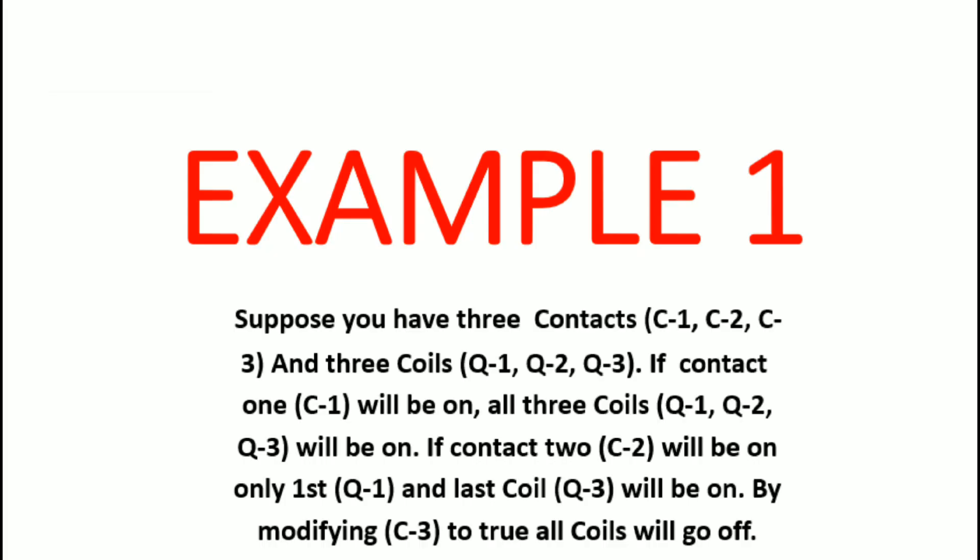The example goes like this: suppose you have three contacts C1, C2, C3 and three coils Q1, Q2, Q3. If contact one (C1) is on, all three coils Q1, Q2, Q3 will be on. If contact two (C2) is on, only the first coil Q1 and the last coil Q3 will be on. By modifying contact C3 to true, all coils will go off.